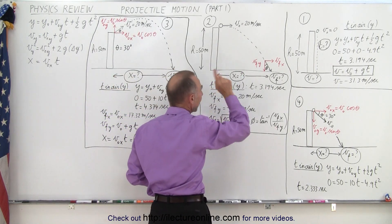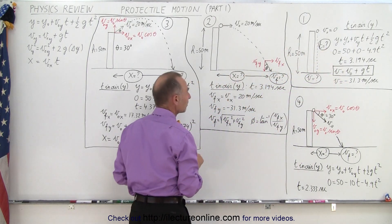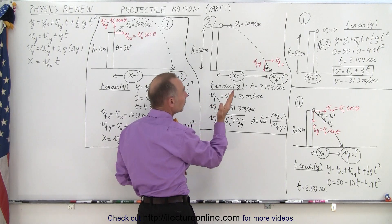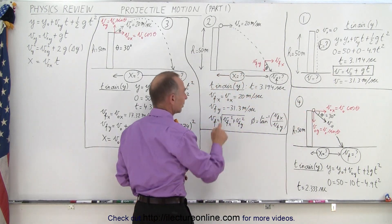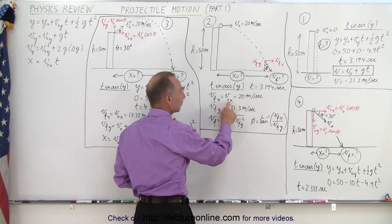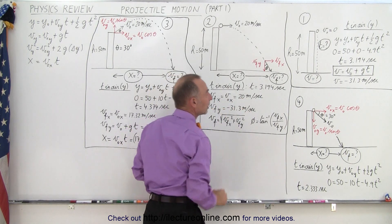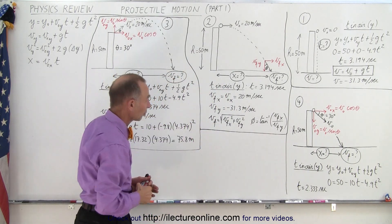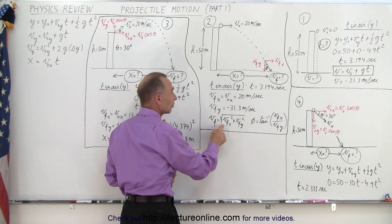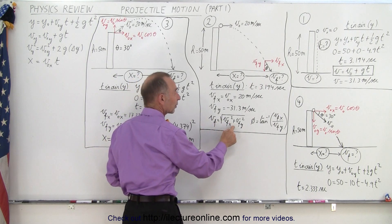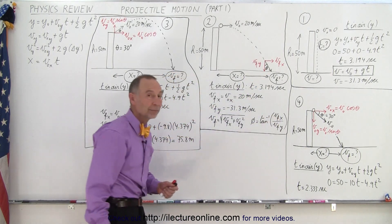In Problem 2 we have an initial horizontal velocity, but the time in the air is exactly the same, so we use the exact same process to find it. The final velocity now has two components: the y-component is the same as before, but the x-component — notice that the final velocity in the x direction equals the initial velocity in the x direction, remaining at 20 meters per second. To find the total final velocity we use the Pythagorean theorem: the square root of the sum of the squares of the components. To find the landing angle we take the inverse tangent of the ratio of the x and y components.